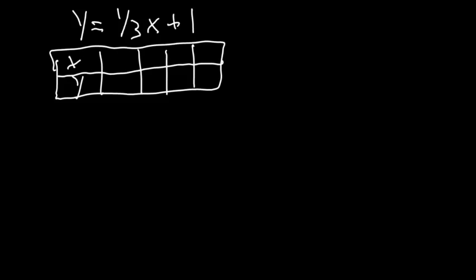So instead of using negative 1, 0, 1, 2 like last time, I'm going to use negative 3, 0, 3, and 6. I start putting these numbers into my function: y equals one-third times negative 3 plus 1.